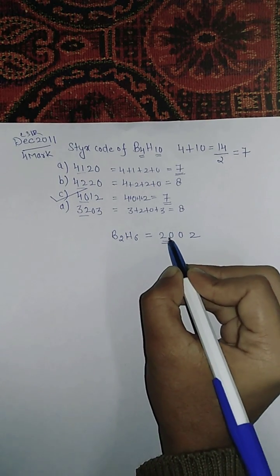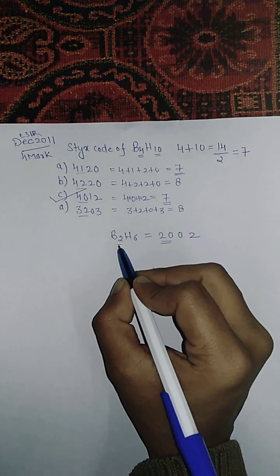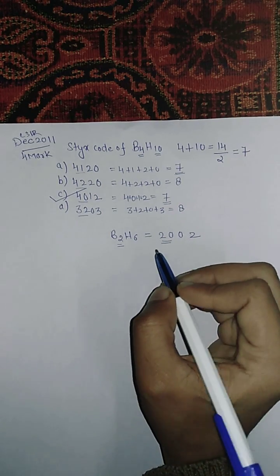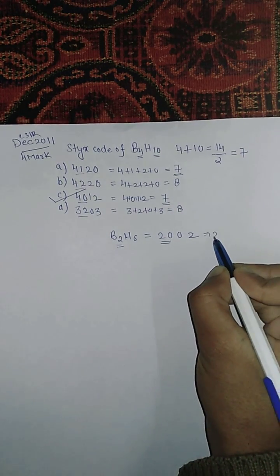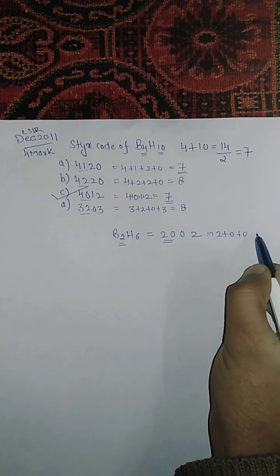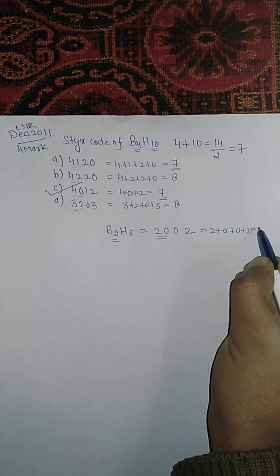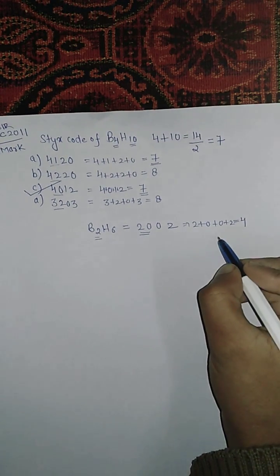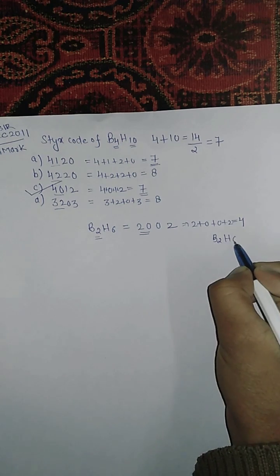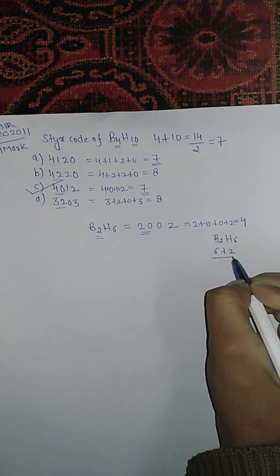And also, 2+0+0+2 equals 4, which equals B2S6: (6+2)/2 = 4. By this method we can solve the question in just 2 seconds.